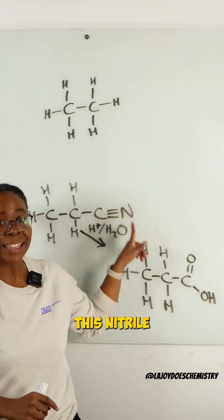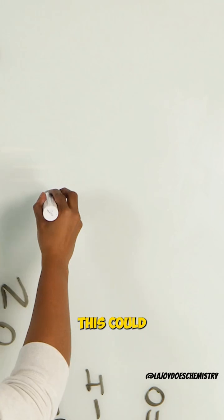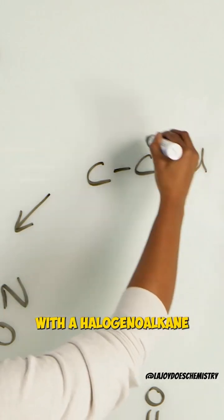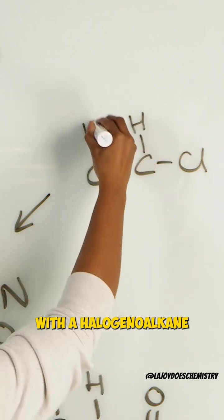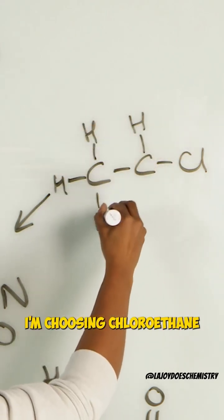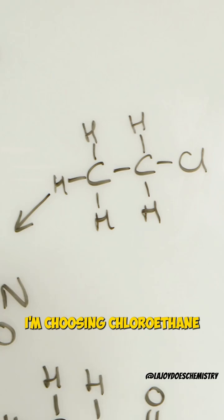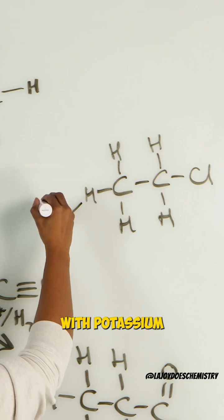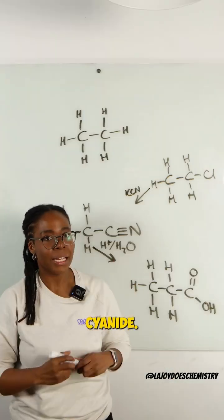So now the question is, how did we get this nitrile group on there? This could have come from nucleophilic substitution with a halogeno alkane. Specifically here, I'm choosing chloroethane for reasons that will become clear later, and so we would react that with potassium cyanide.